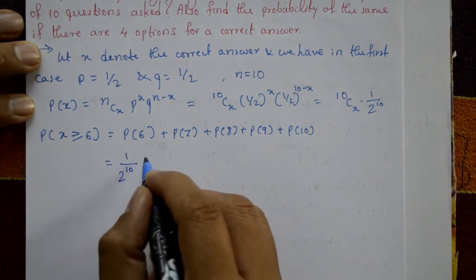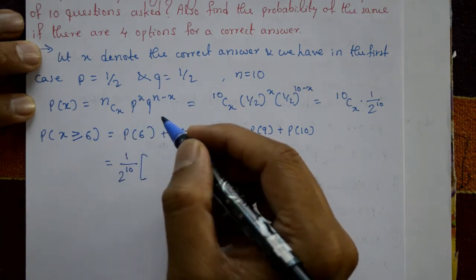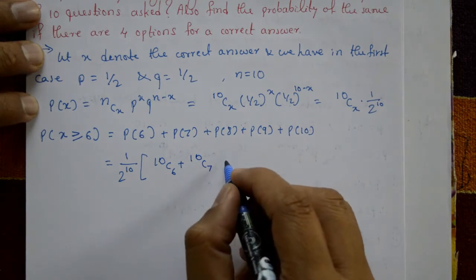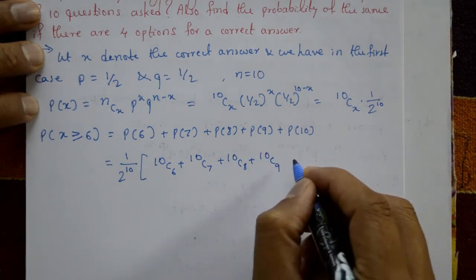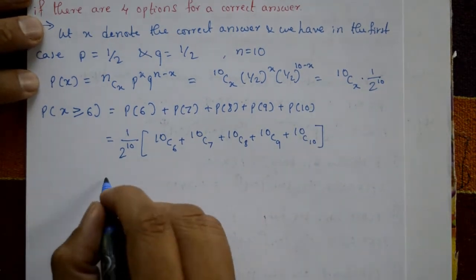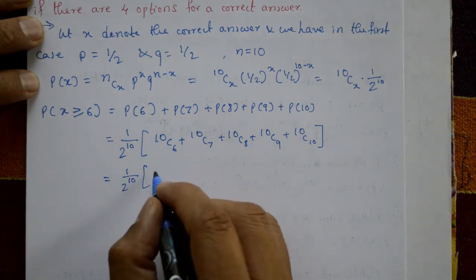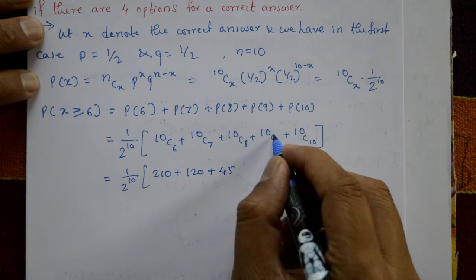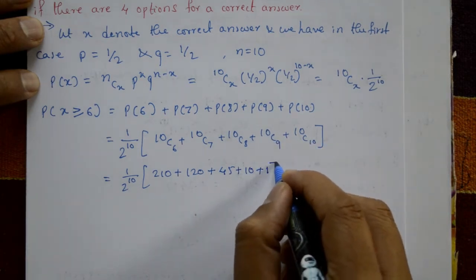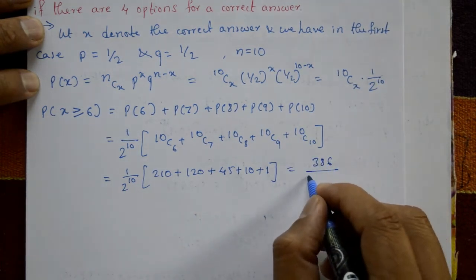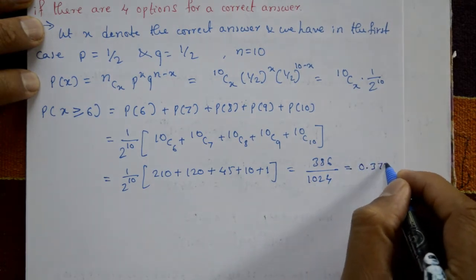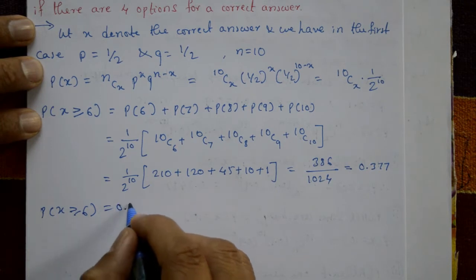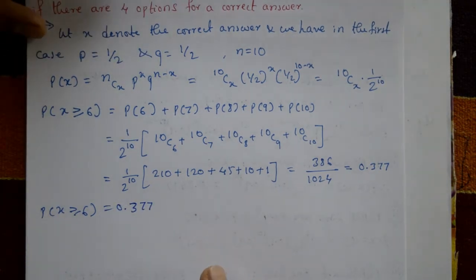Using the binomial distribution with (1/2)^10 as a common factor, we get: (1/2)^10 × [10C6 + 10C7 + 10C8 + 10C9 + 10C10] = (1/2)^10 × [210 + 120 + 45 + 10 + 1] = 386/1024. The answer is approximately 0.377.